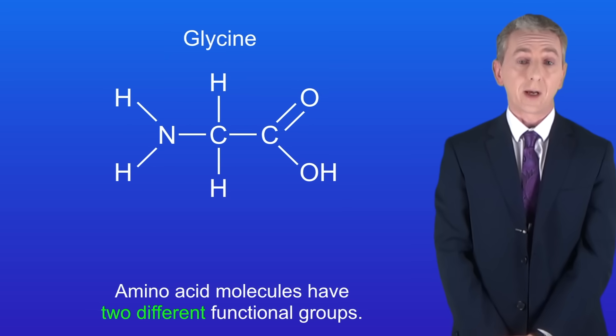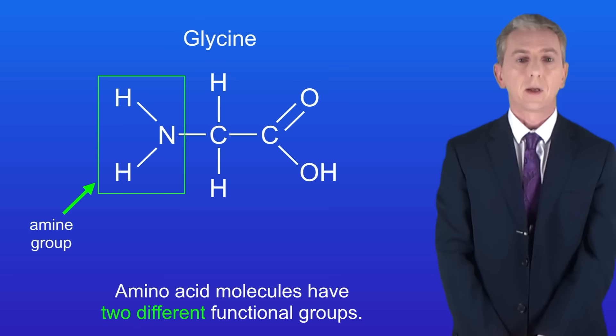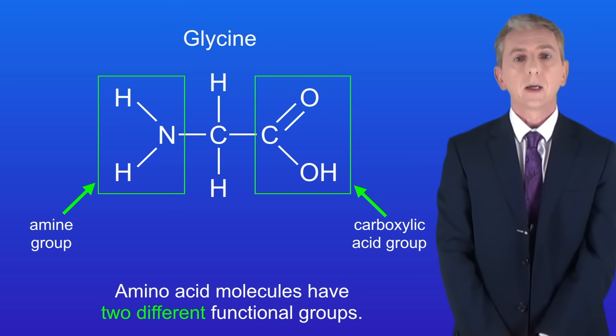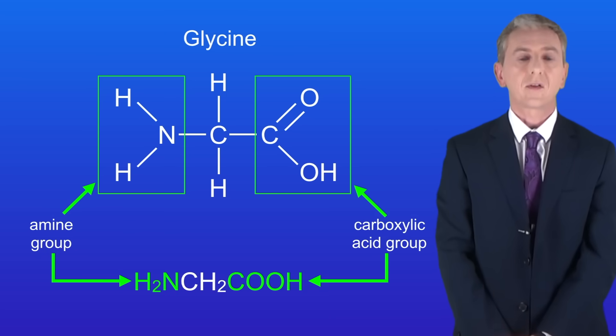Now the key feature of amino acid molecules is that they have two different functional groups. On the left hand side we've got the amine group and on the right hand side we've got the carboxylic acid group. I'm showing you the structural formula of glycine here and again we can see the amine group and the carboxylic acid group.